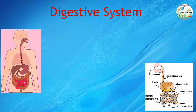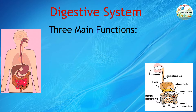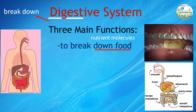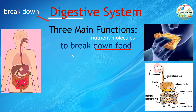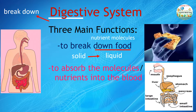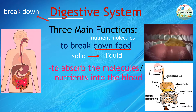The digestive system has three main functions. Digestive comes from the root word digest, which means break down. So its first function is to break down food into molecules the body can use — not just breaking down into smaller pieces, but turning it into nutrient molecules. If you're eating solid food, it will be broken down to liquid form, or what we call molecules. The second function is to absorb the molecules or nutrients into the blood. And after the body has absorbed the necessary nutrients, the third function is to eliminate waste from the body.